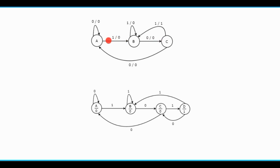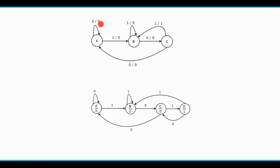The reverse is also true: the number of states in a Mealy machine is less than or equal to the number of states in a Moore machine. For example, in the Mealy machine during state A, both outputs are 0 regardless of input. During state B, both outputs are also 0. But during state C, the outputs are different: if input is 1 the output is 1, and if input is 0 the output is 0. So the maximum possible outputs are 0, 0, 0, and 1.